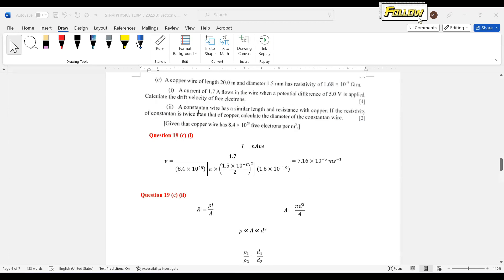We move on to the next one. Constantin wire has a similar length and resistance with copper. And if the resistivity of the constantin is twice that of copper, calculate the diameter of the constantin wire.